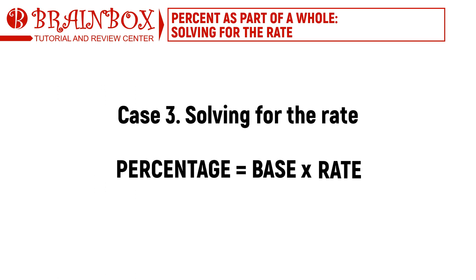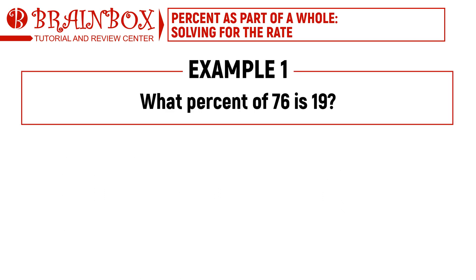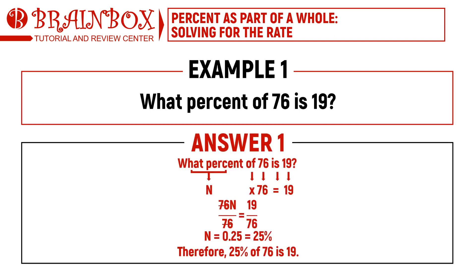Let's solve for the rate. Example: What percent of 76 is 19? Here, 'what' translates to our unknown N, 'of' translates to multiplication, 76 is our base, 'is' translates to an equal sign, and 19 is our percentage. This gives us the equation N times 76 equals 19. To get N, divide both sides by 76, giving N equals 19 divided by 76, which equals 0.25. Converting to percent: 25%. So 25% of 76 is 19.